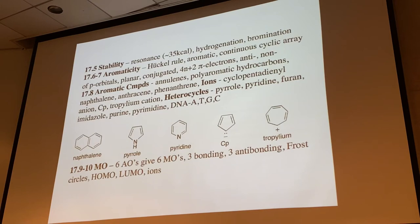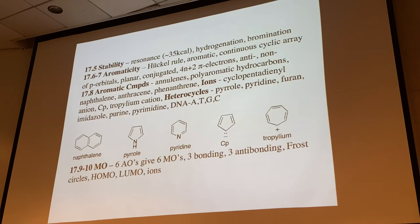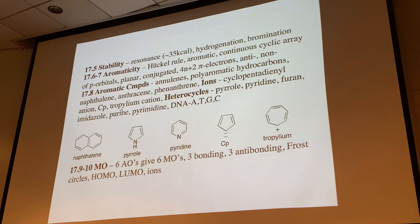Substituting into the 4n+2 rule: n=0 gives 2 pi electrons; n=1 gives 6 (that's benzene). The magic numbers are 2, 6, 10, 14, 18 and so on. We'll look at MO theory to justify this. Aromatic compounds include anilines, polycyclic aromatic hydrocarbons, and higher-order systems like naphthalene. This applies not just to carbon - certain ions are aromatic too.